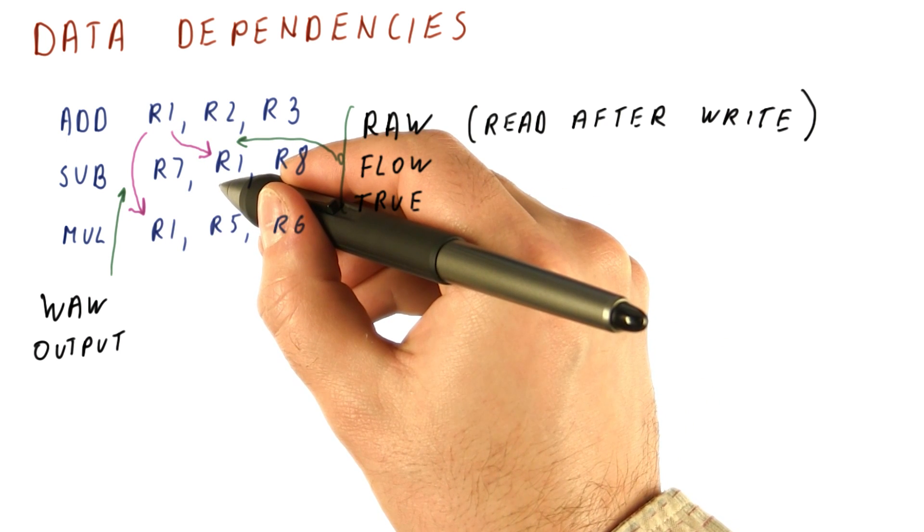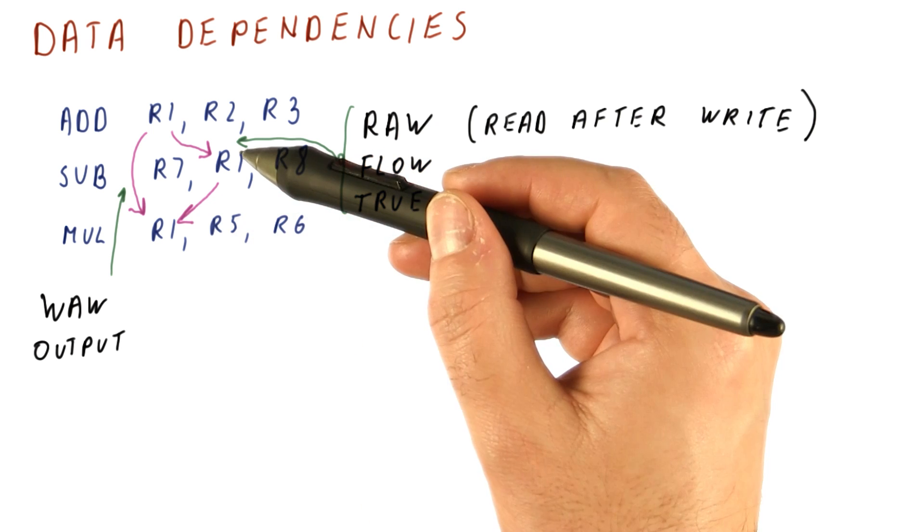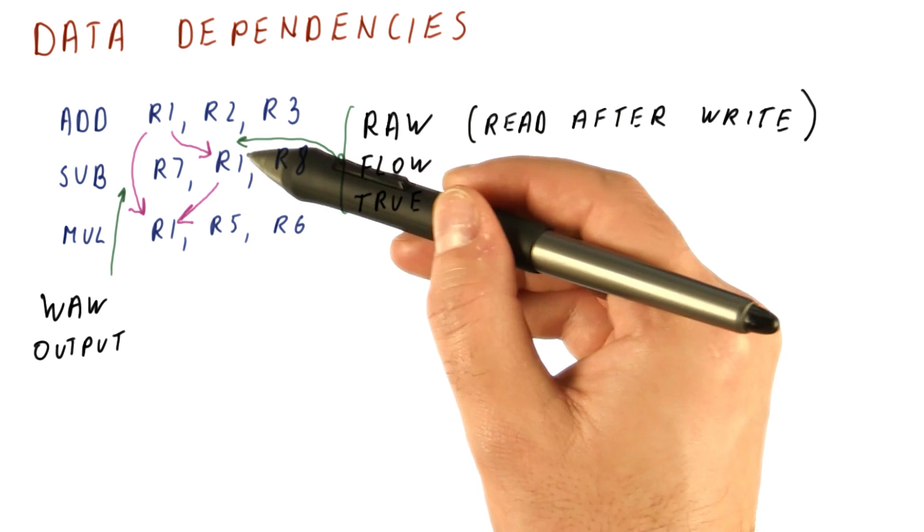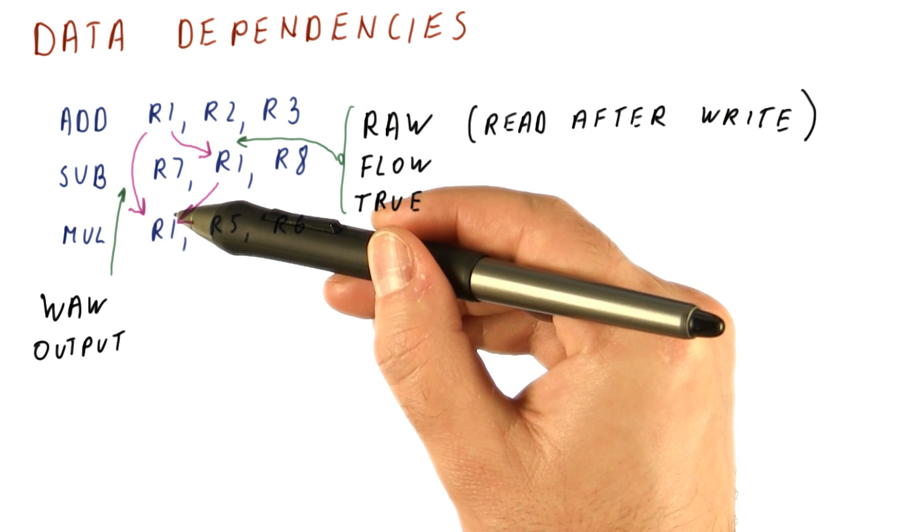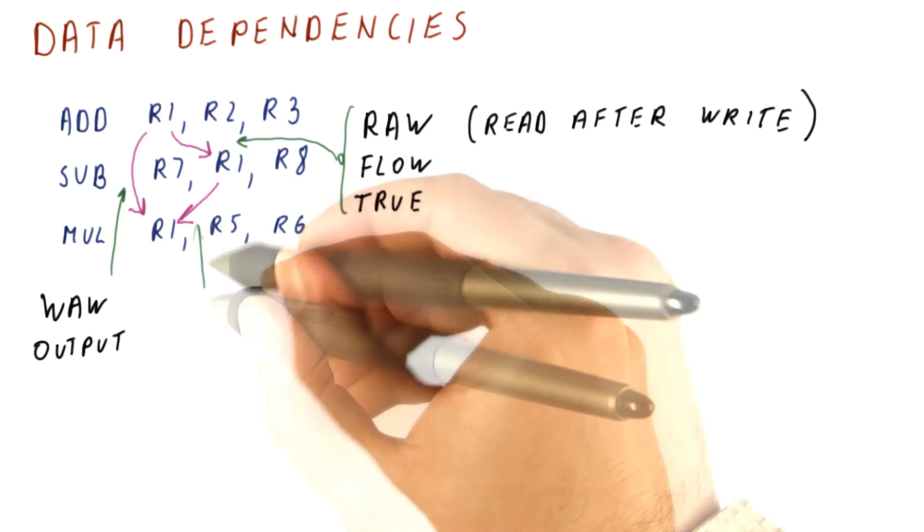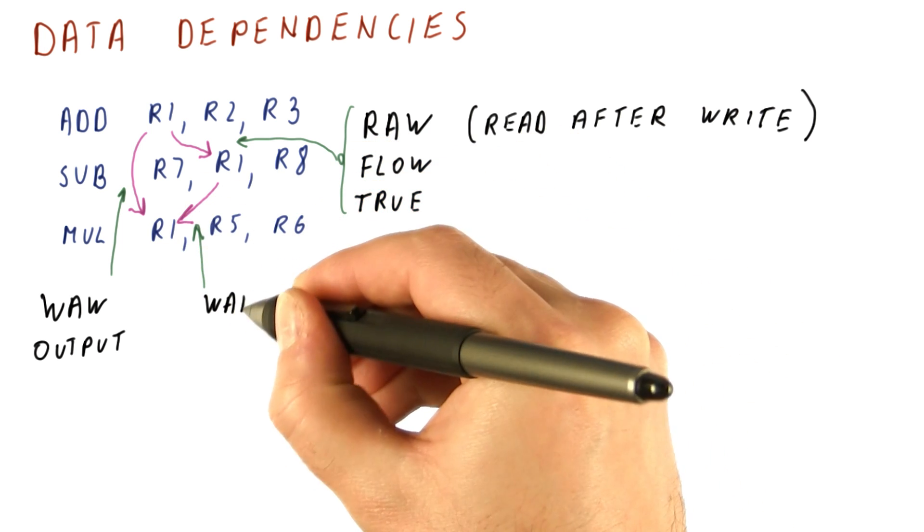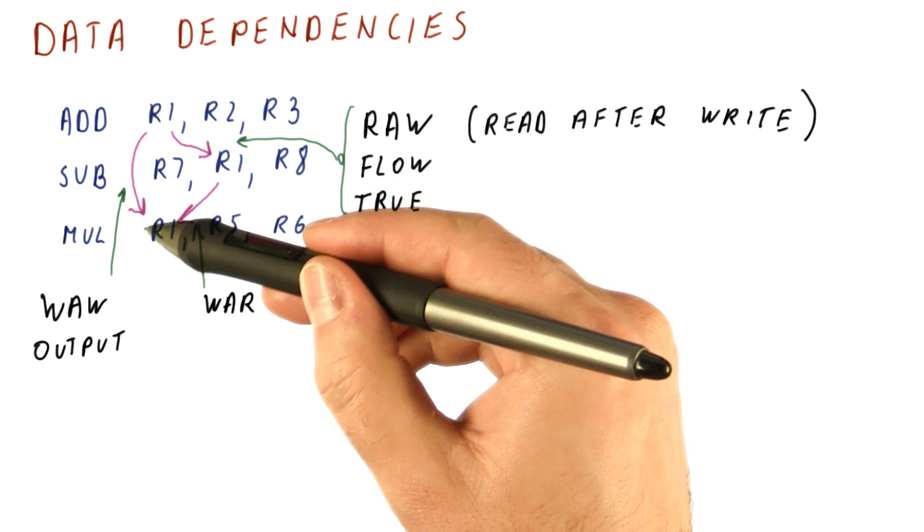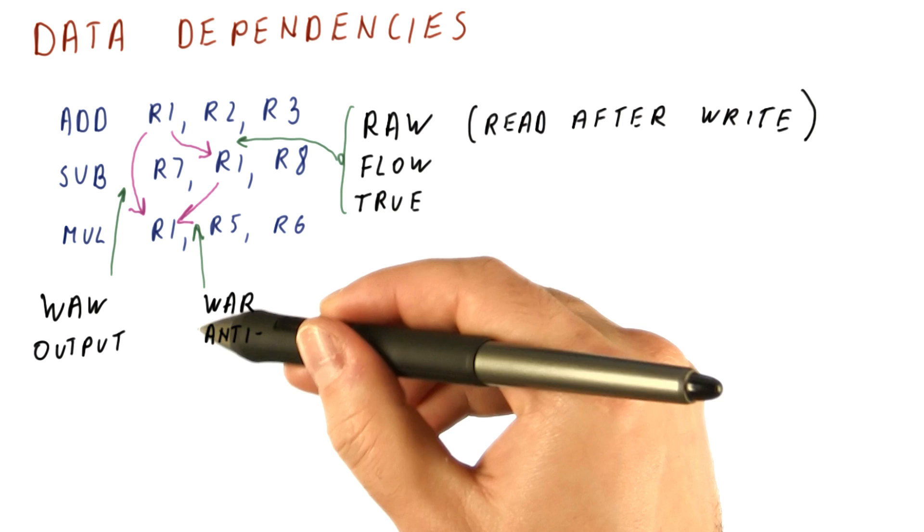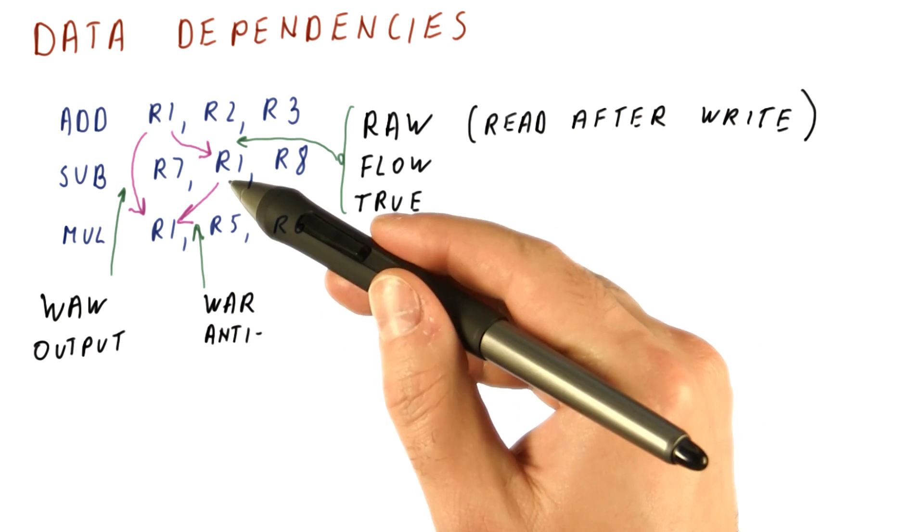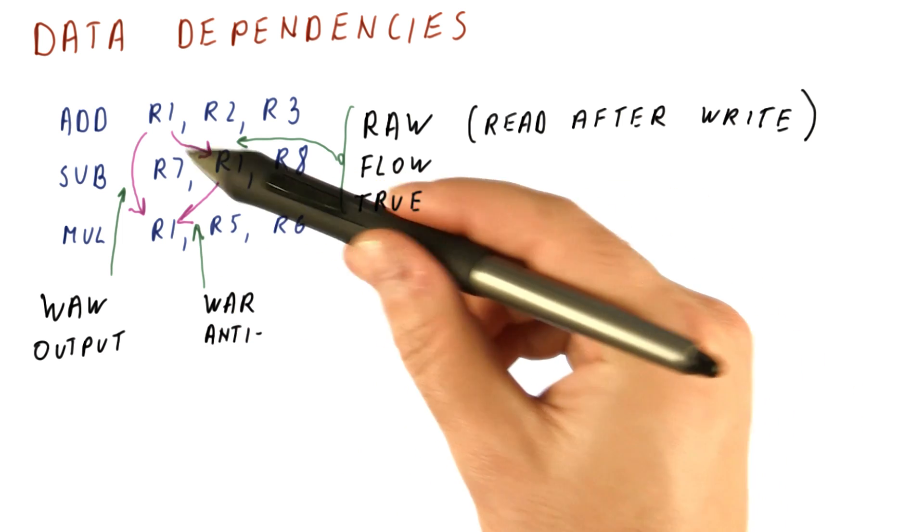The third type of dependence is here. The subtract needs to finish reading R1 before multiply can be allowed to overwrite it. This type of dependence is called write after read because the write needs to happen after this read. And it is also called anti-dependence because it sort of reverses the order of the flow dependencies.